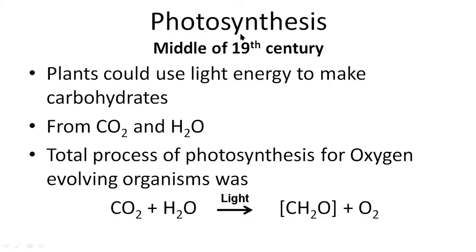By the middle of the 19th century, key features of photosynthesis were well known: light energy is essential, photosynthesis produces carbohydrates, and carbon dioxide and water act as reactants. The entire process is represented by the equation where carbon dioxide and water are converted into carbohydrate — CH₂O represents carbohydrate — using light energy, with evolution of oxygen during the process.